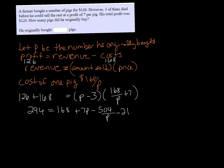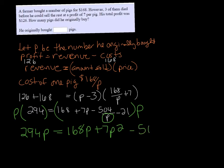Now we have one variable in the denominator and we don't want that, so we're going to multiply both sides of the equation by P to get the P out of the denominator. So we get $294P equals $168P plus $7P squared minus $504 minus $21P.